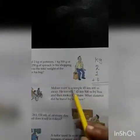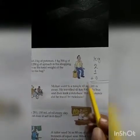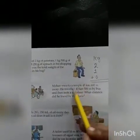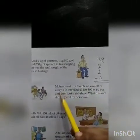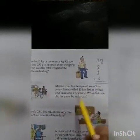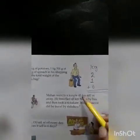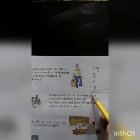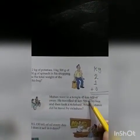Mohan ko temple jaane ke liye 45 km 600 m ka raasta leta hai. Woh 43 km 500 m ka raasta bus se paar kar chuka hai, uske baad usne riksha liya. Ab bataiye, usko rikshe se kitna distance rehta hai. Toh aap kya karenge — 45 km 600 m mein se 43 km 500 m subtract kar denge.